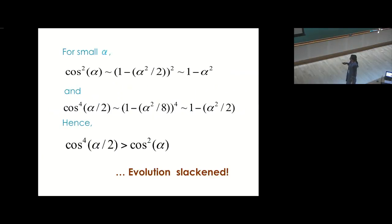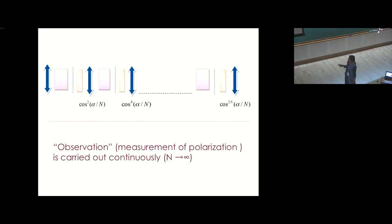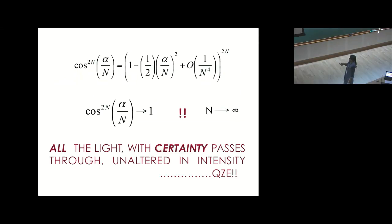The final intensity will be proportional to fourth power of cos and angle now is alpha by 2. Interestingly, for small alpha, cos square alpha is 1 minus alpha square, and cos to the power 4 alpha by 2 is 1 minus alpha square by 2. So it is clear that cos raised to the power 4 alpha by 2 is greater than cos square alpha. The evolution slackened. Now if I have n such systems where n tends to infinity, observations are carried out continuously. It can be shown that cos to the power twice n alpha by n tends to 1 for n tends to infinity. All the light with certainty passes through unaltered in intensity. This is the quantum Zeno effect.